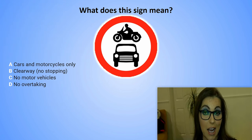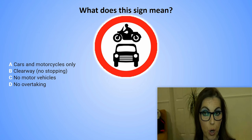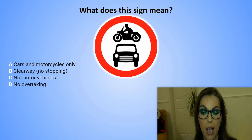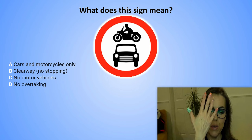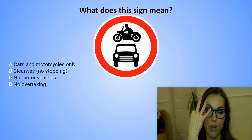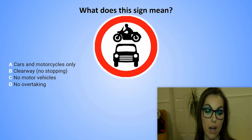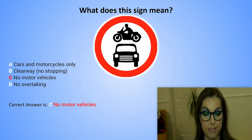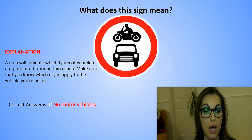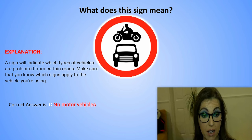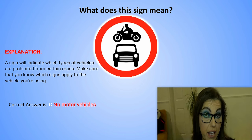What does this sign mean? A. Cars and motorcycles only. B. Clearway, no stopping. C. No motor vehicles. D. No overtaking. The correct answer is C. No motor vehicles. Explanation: A sign will indicate which type of vehicles are prohibited from certain roads. Make sure that you know which signs apply to the vehicles you are using.